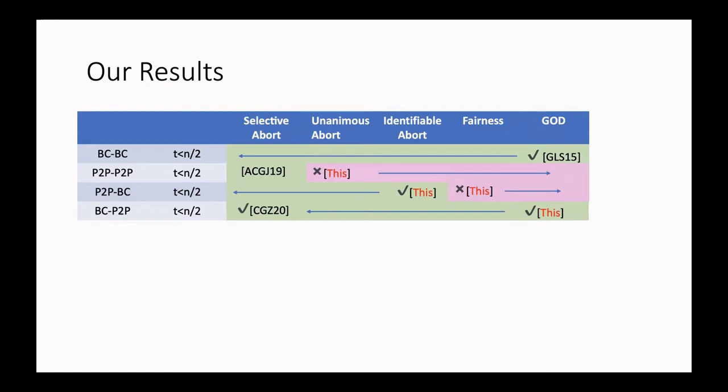Moving on, if we allow broadcast in at least one of the two rounds, we can show that if we allow broadcast in the second round, the best possible notion one can achieve is identifiable abort, while achieving fairness is impossible. If we allow broadcast in the first round, then the notion of guaranteed output delivery becomes possible again. In our work, we show that given any broadcast-broadcast GOD protocol with honest majority satisfying some extra property, there is also a protocol that can be run when the second round is over peer-to-peer communication.